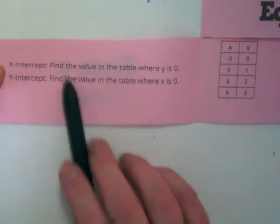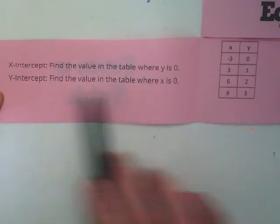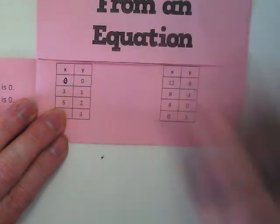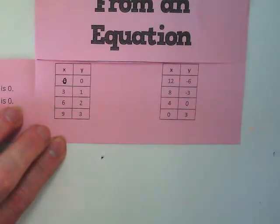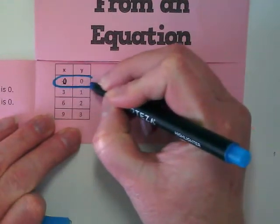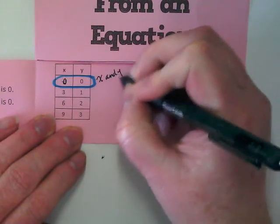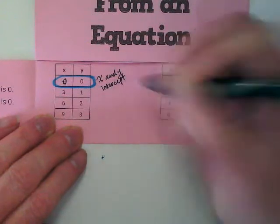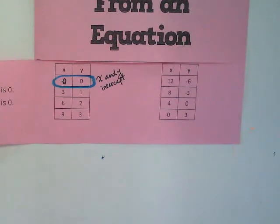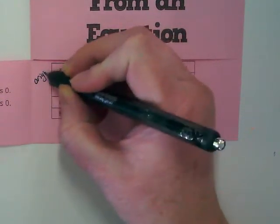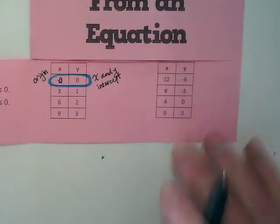So read here. For the x-intercept, you're going to find the value in the table where the y is 0. In the y-intercept, you're going to find the value in the table where the x is 0. There's a typo here. Change this x to a 0. This x-y pair is going through the origin. When it goes through the origin, it is both the x and the y-intercept. Let's just label. This is the y-intercept, and the coordinate pair is 0, 0.